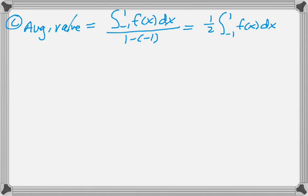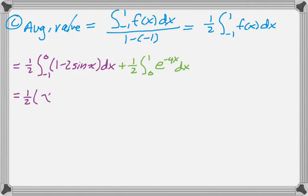And what happens here is that we have to break up f of x according to the branches. So it'll be 1 half the integral from negative 1 to 0 of 1 minus 2 sine of x dx plus 1 half the integral from 0 to 1 of e to the negative 4x dx. And let me tell you, you will never be happier that they will accept unsimplified answers than you will in this particular problem.